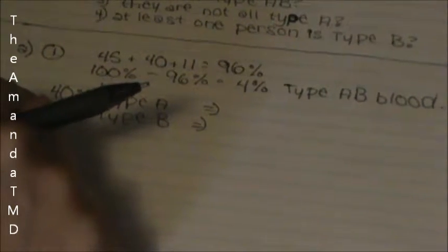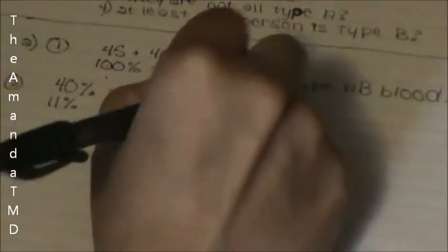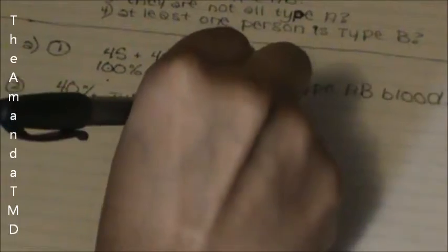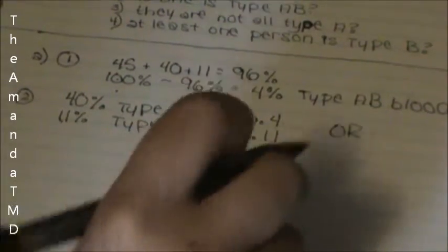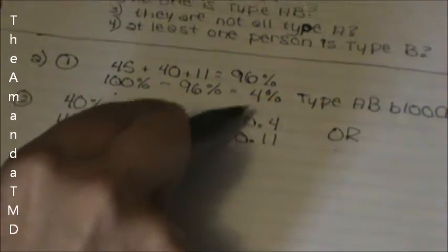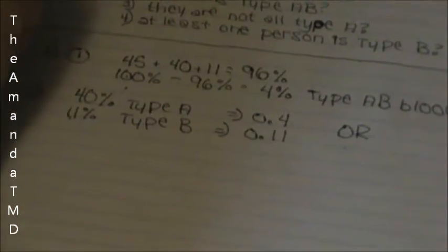40%, to change to a decimal, you divide by 100, which comes out to be 0.4, and 11%, once again, you divide by 100, which comes out to 0.11. Since the word OR is given in the question, it means that you have to multiply these two probabilities to find out your answer for this one.